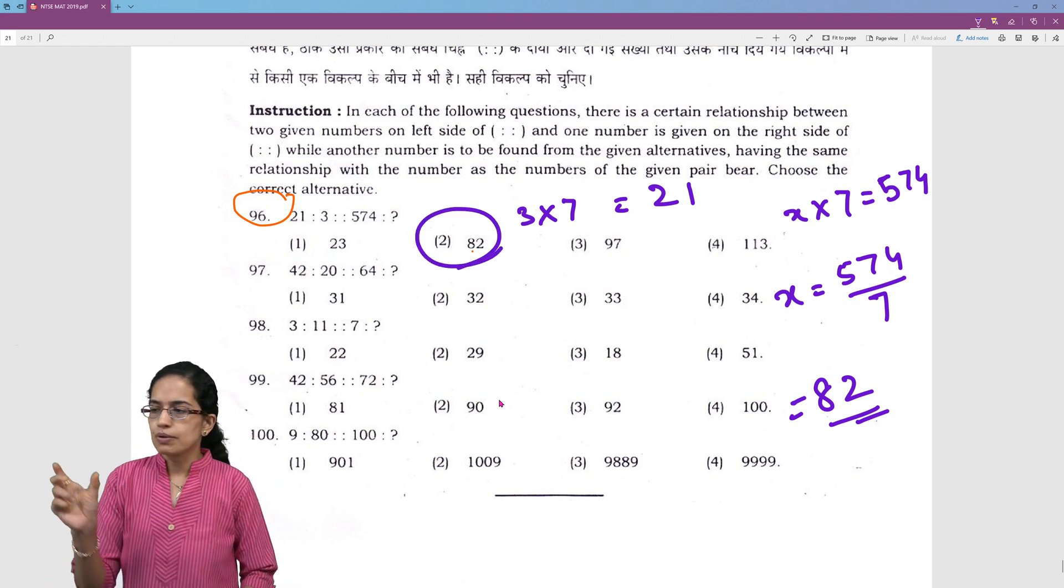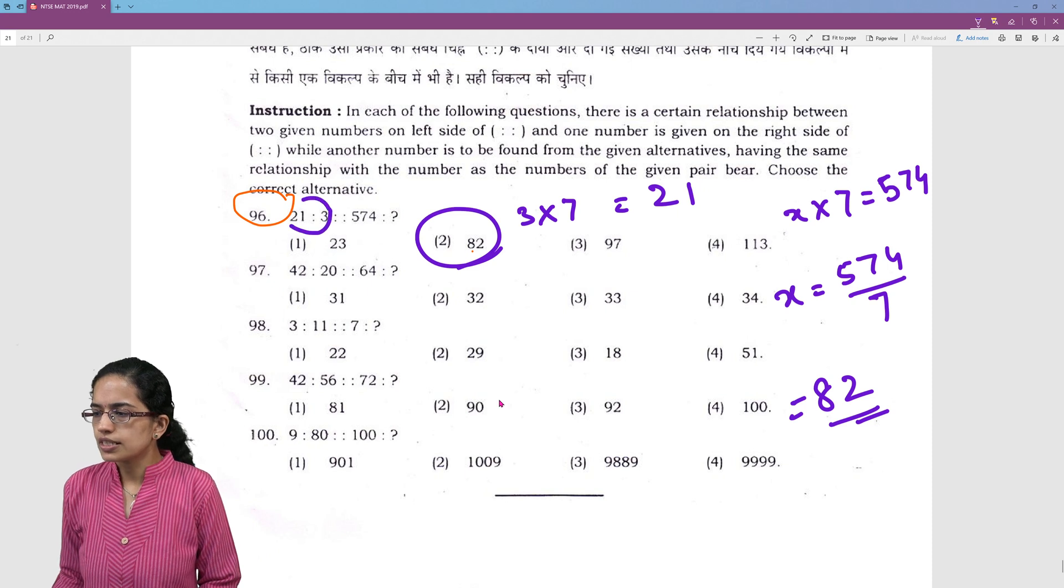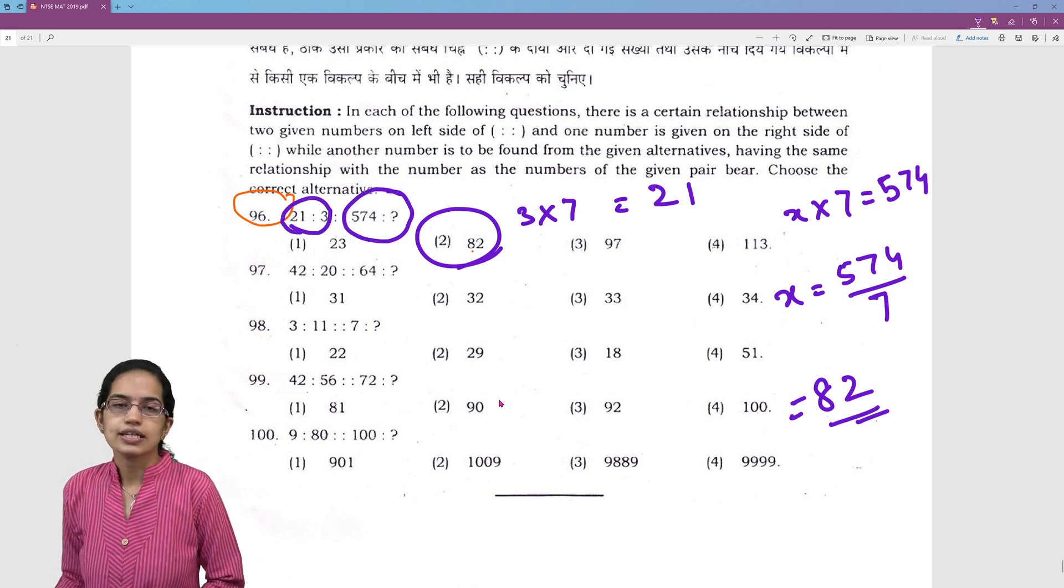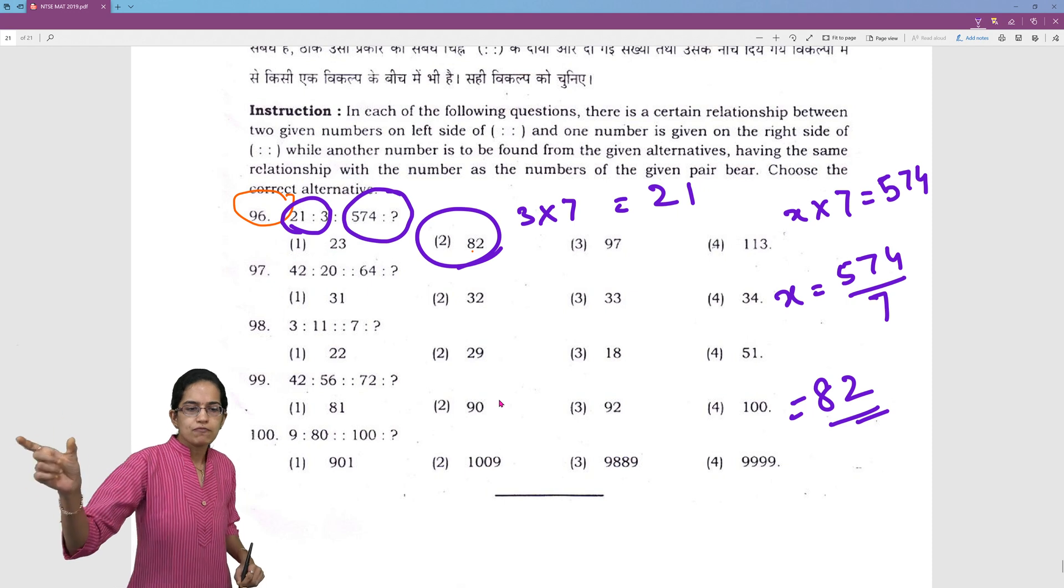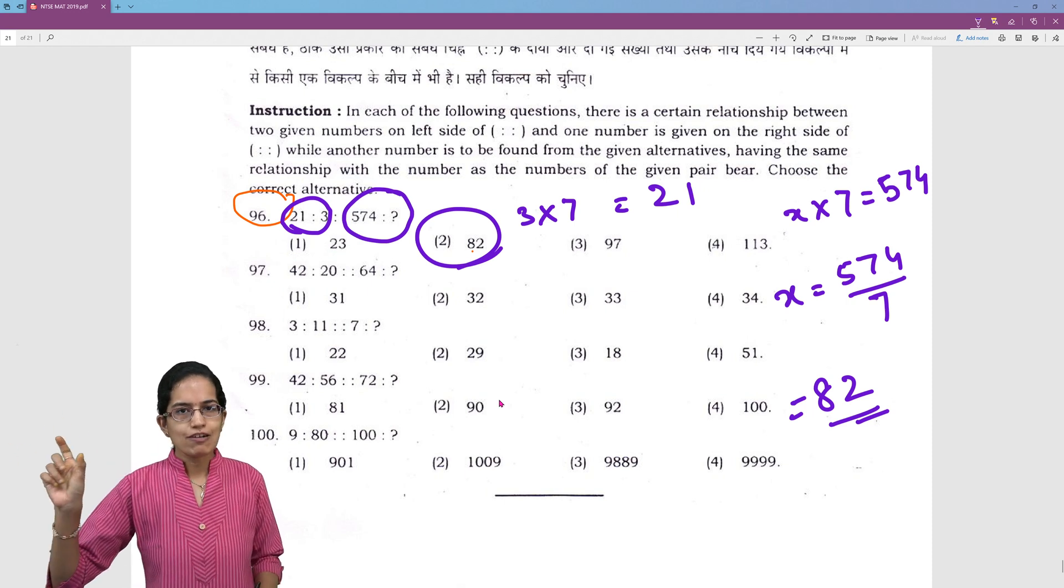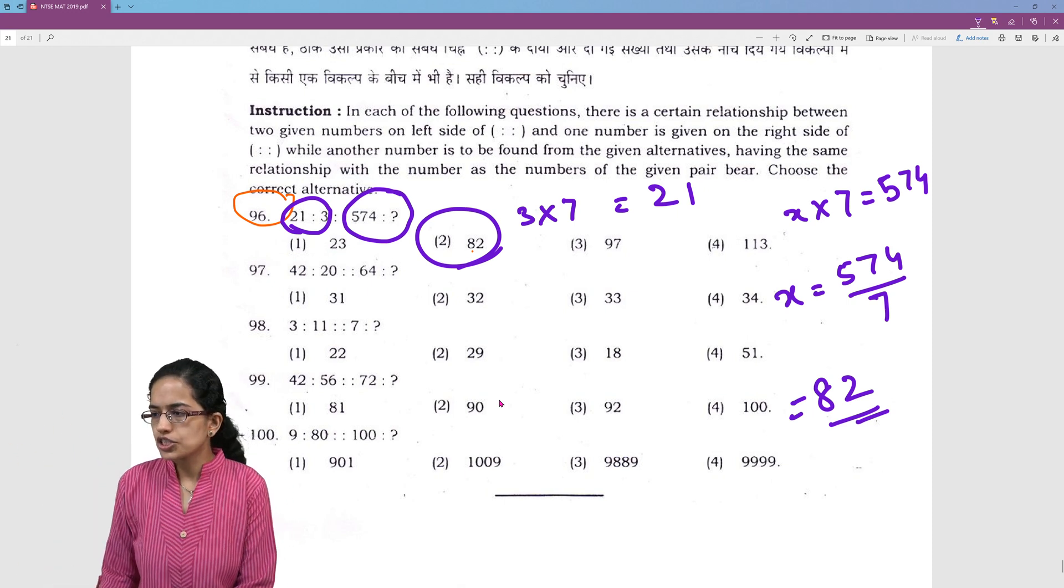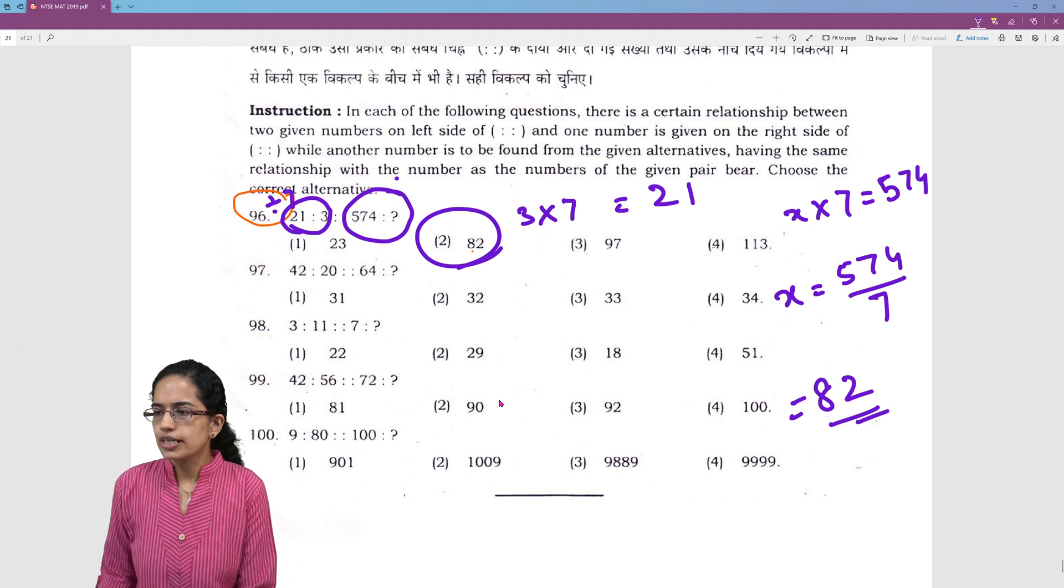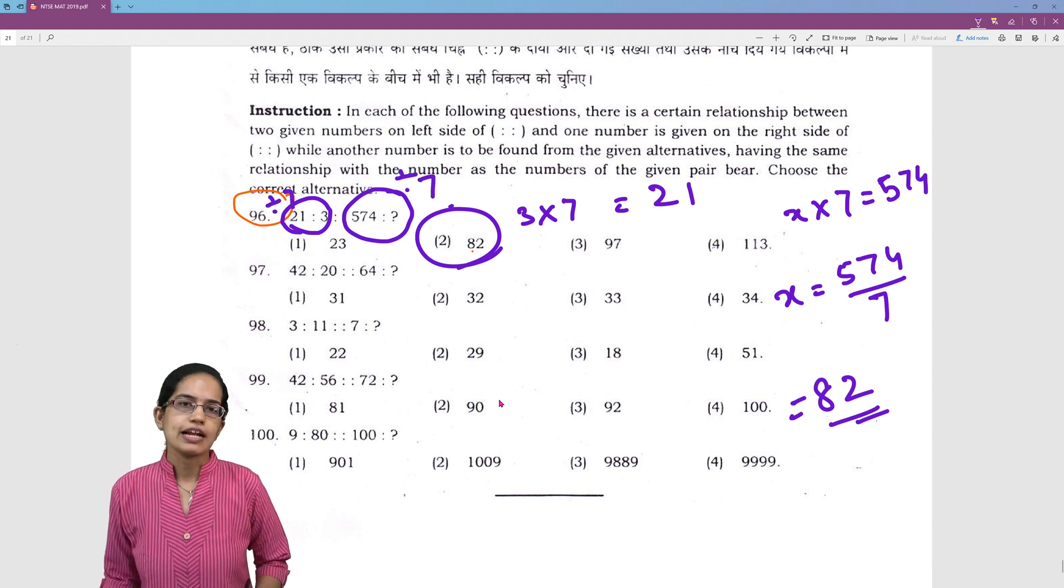Again, a very simple problem on analogy. The relation between the first two would be similar as the relation between the second two. So, in the first two numbers, I have multiplication. I have division by 7. So, again here, there would be division by 7. That would be witness.